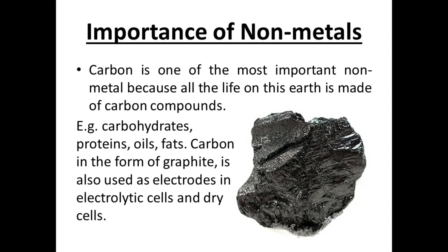Carbon in the form of graphite — we all know that carbon has two allotropic forms, one is graphite and one is diamond. In the form of graphite, it is also used as an electrode in electrolytic cells and dry cells. That's why carbon is a very important non-metal.